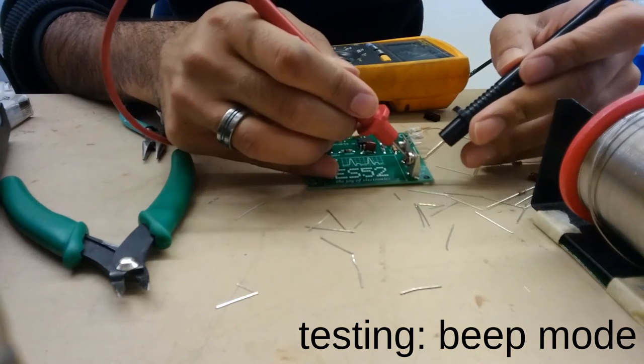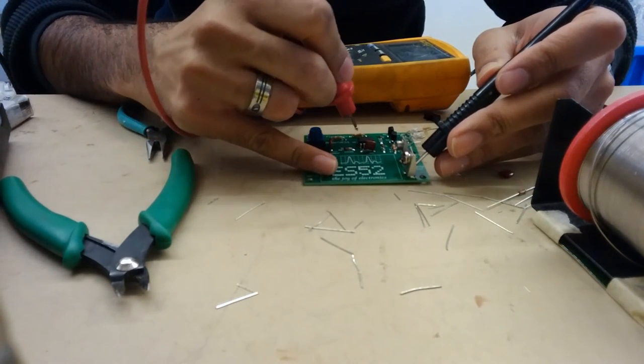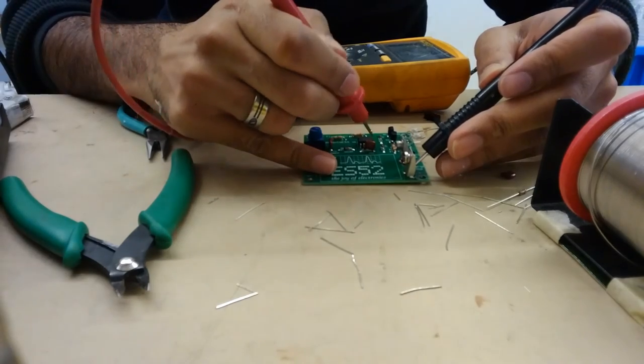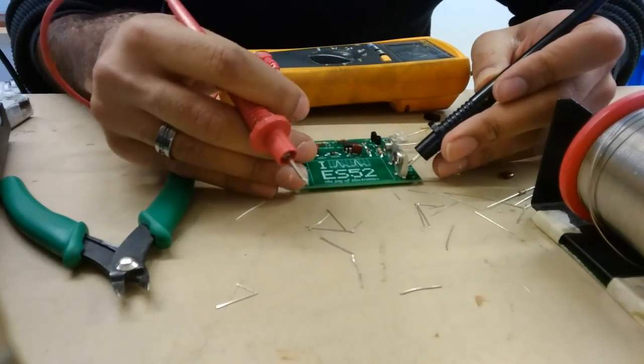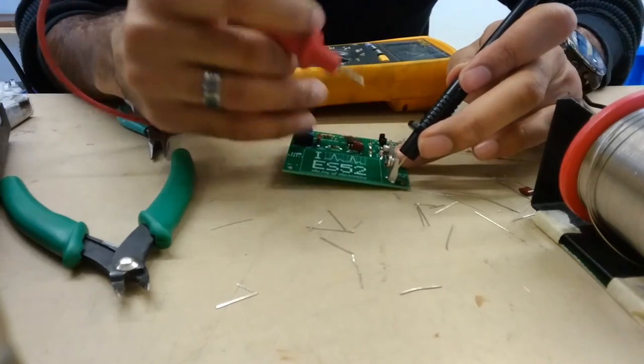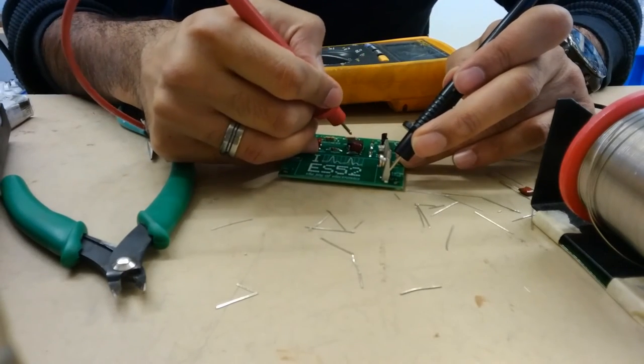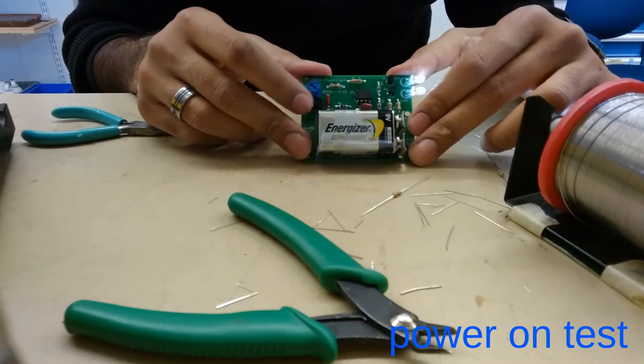Another good test to do is beep mode. And what that'll do is it'll beep if things are conductive. So you can make sure that your solder worked and different parts in the circuit that are supposed to be connected are connected. Note to self, always double check that the switch is in the on position. Otherwise you won't be able to see if things are connected or not.